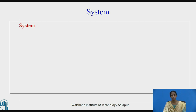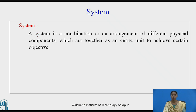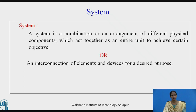Let us see what is a system. A system is a combination or an arrangement of different physical components which act together as an entire unit to achieve certain objective. It can also be defined as an interconnection of elements and devices for a desired purpose.